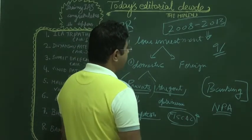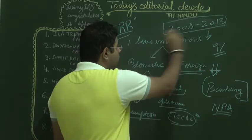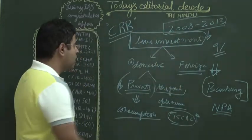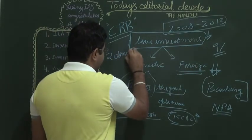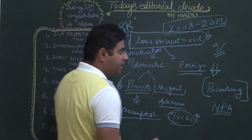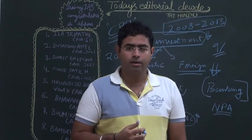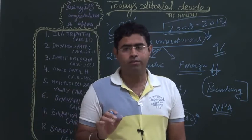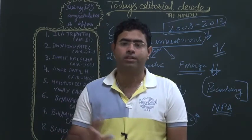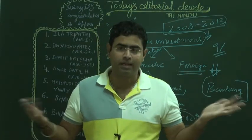Apart from low investment, there is another reason why the economy has clocked low economic growth — demonetization. Demonetization se economy mein cash crunch raha for 2-3 months, and this became the reason for the slowdown in the Indian economy, specifically in the third and fourth quarter of 2016-17. So this was all for the editorial decode.